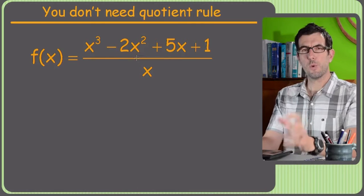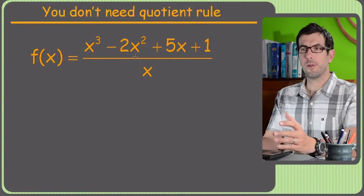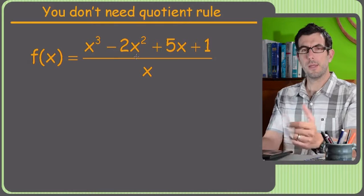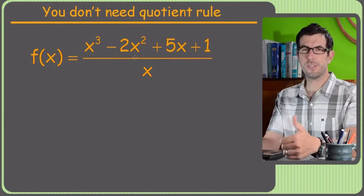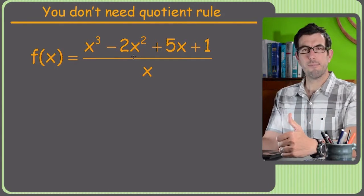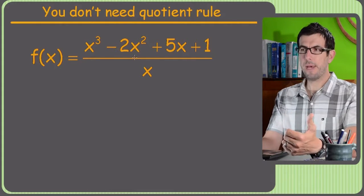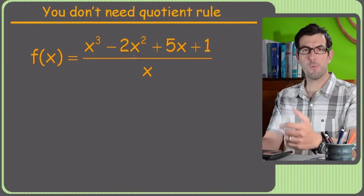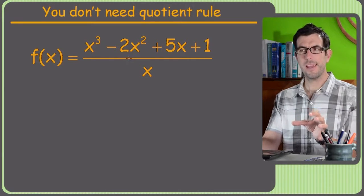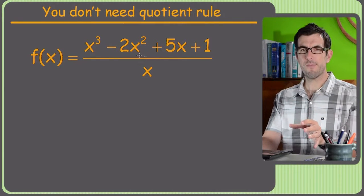Next up, the quotient rule is actually the one you want to avoid the most. So the power rule, even with the chain rule, the power rule is not that bad. Even with the chain rule, the product rule isn't that bad. The quotient rule is the one where if I was you, I would always be trying to figure out a way to simplify your way out of it first.